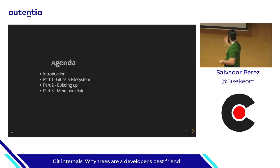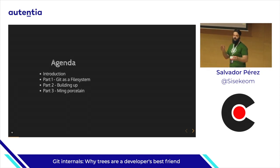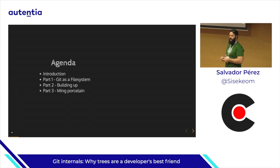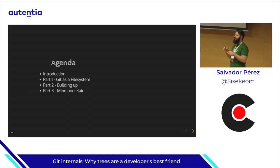This talk is about git internals and this is the agenda we will have today. First I will do a very brief introduction. I've split the talk into three parts. For the first one I will talk about the low-level data structures that git manages. After that I will provide data on some extra structures git manages. And after that I will talk about all the high-level commands you can use and how they relate to those data structures, if time allows it.